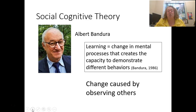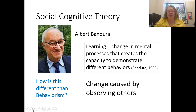When we think about the name, we have "social," which is the modeling and external environmental influences, and we have "cognitive," which is the processes happening in our brain and inside of ourselves that cause the capacity to change behaviors. This is different from behaviorism, which is really just that change in behavior. Social cognitive theory expands upon that to include the internal mental processes that are happening.